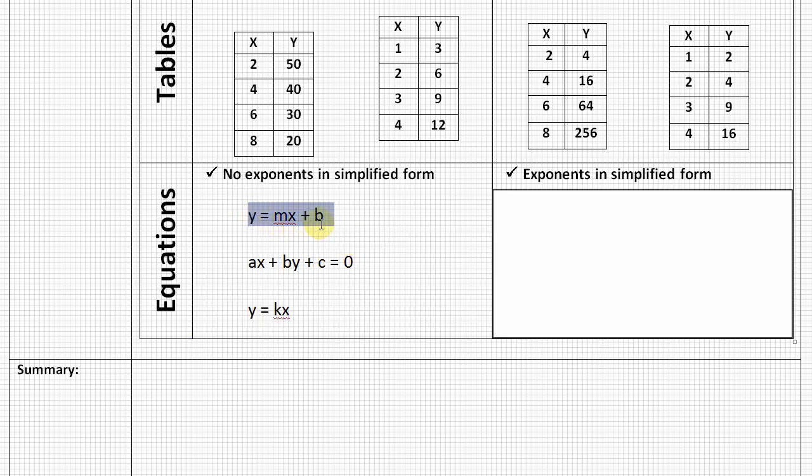This is going to be the most popular one that we use all year long. You probably have already been introduced to it in 7th grade, y equals mx plus b. Here's another one, ax plus by plus c equals 0. And in our final one, y equals kx. So these are just three equations, and so in each of these, you can see there's no exponents on any of these variables. And so by not having any exponents, then we know that it is a linear relationship.